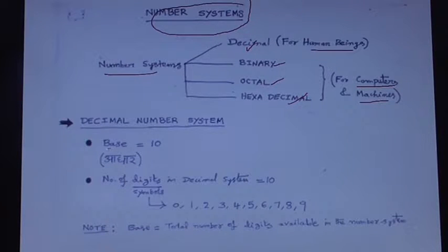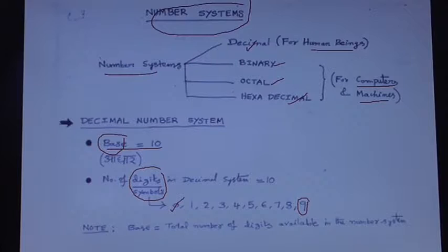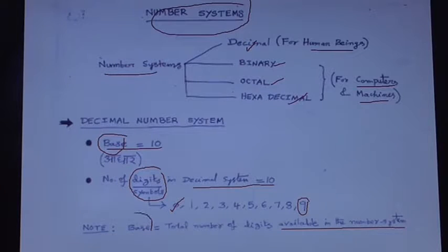Decimal number system: the base of the decimal number system is 10. The base refers to the number of digits or symbols available in the system. Remember, counting always starts from 0 — digits 0 through 9. So the total number of digits in the decimal system is 10. The number of digits available in a number system is equal to its base.